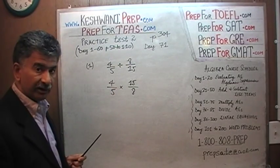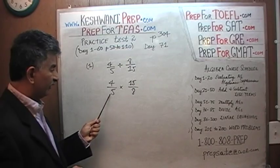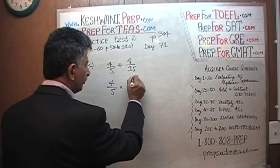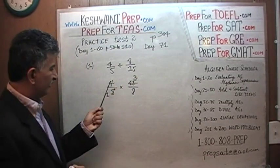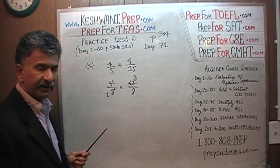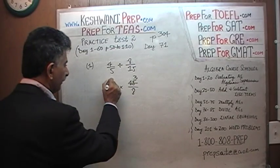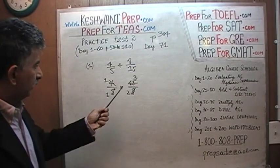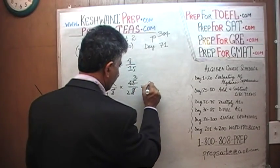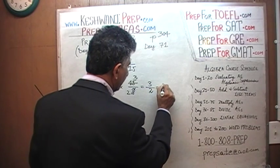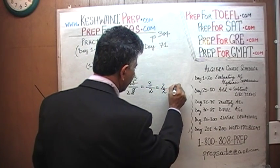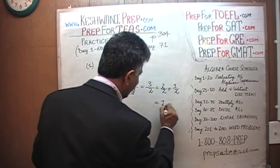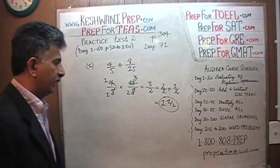Now we just have to reduce it if we can. We see a 15 here and a 5 here, so let's divide top and bottom by 5. If we divide top and bottom by 5, 15 becomes 3 and the 5 just becomes 1. We see a 4 here and an 8 here, so let's divide top and bottom by 4. So 4 becomes 1 and 8 becomes 2. This is just 1 over 1, which is just 1, and 3 over 2 is just 3 over 2, which can be written as 2 over 2 plus 1 over 2. And of course 2 over 2 is 1, so it's 1 and 1 half. That's our final answer: 1 and 1 half.